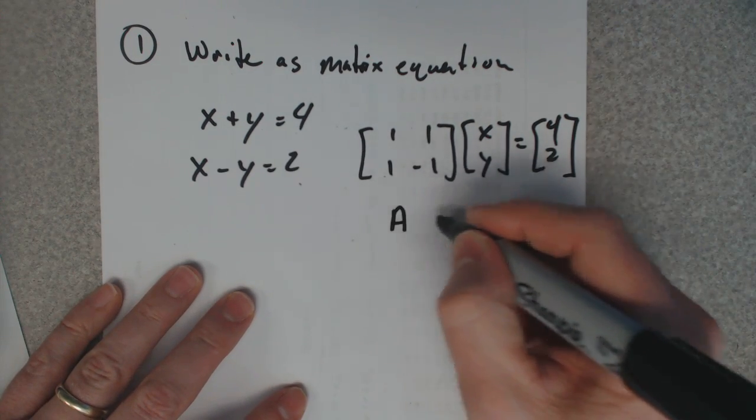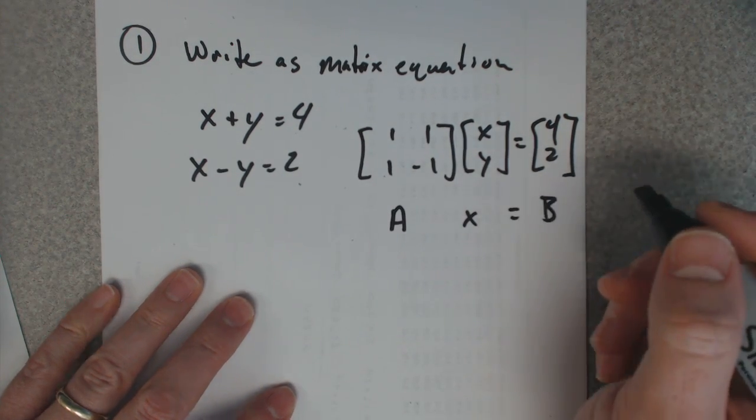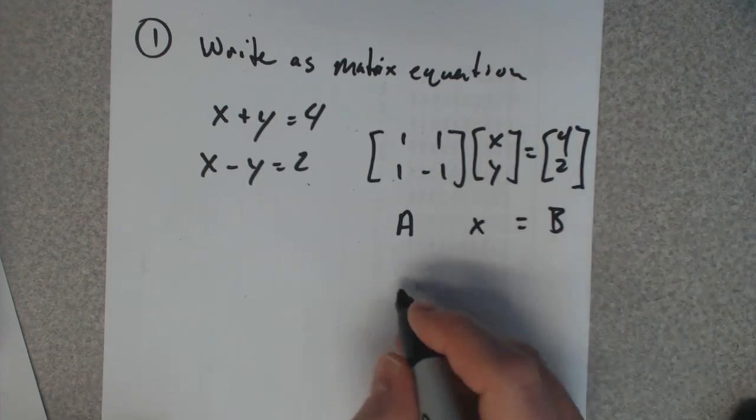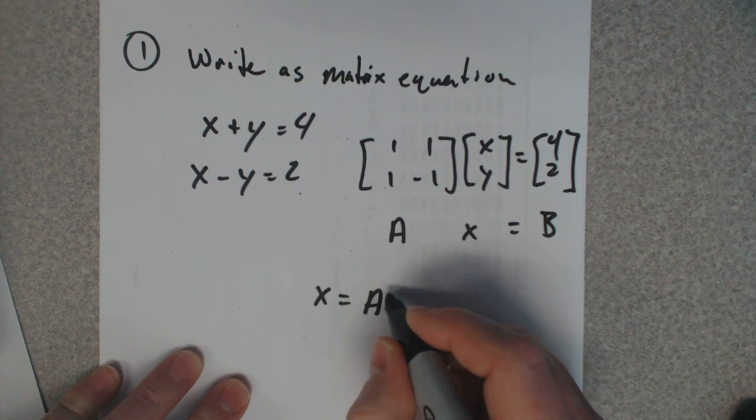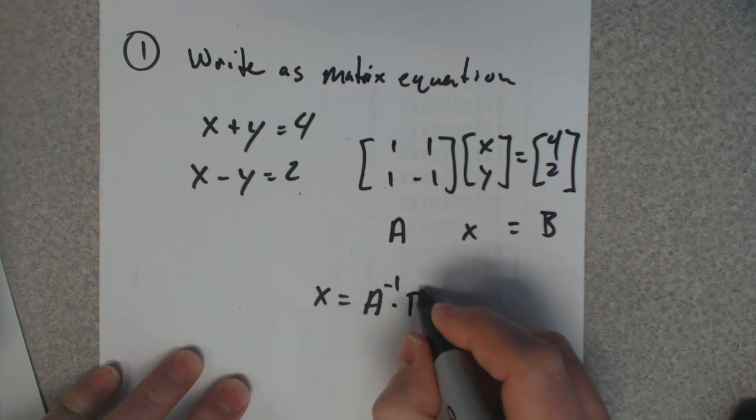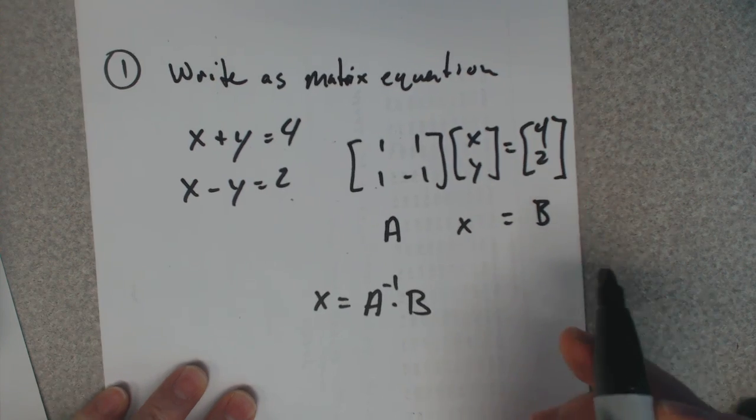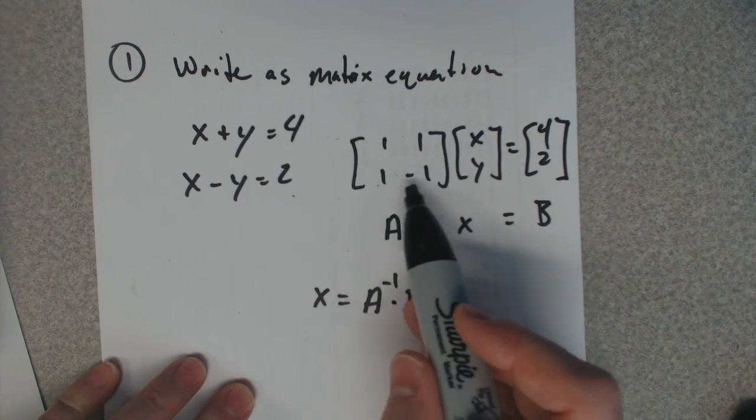I'm going to name this matrix A, this matrix X, and this matrix B. To find this matrix is A inverse times B, the inverse of this matrix times B. So you need to find the inverse of this.